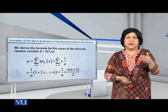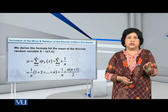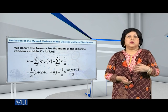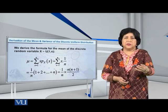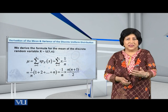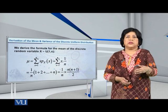After this, 1 over n, we take it outside the summation, because it is a constant. And now what have we got? We get 1 over n into summation of x.